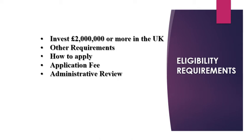If the Home Office refuses your application, the remedy is Administrative Review. Administrative Review means the decision will be reconsidered by someone else, such as another entry clearance officer or entry clearance manager. However, if they refuse again, you cannot appeal against the refusal, but you can challenge the decision by way of Judicial Review if you find the decision was wrong or not according to law or was unreasonable.